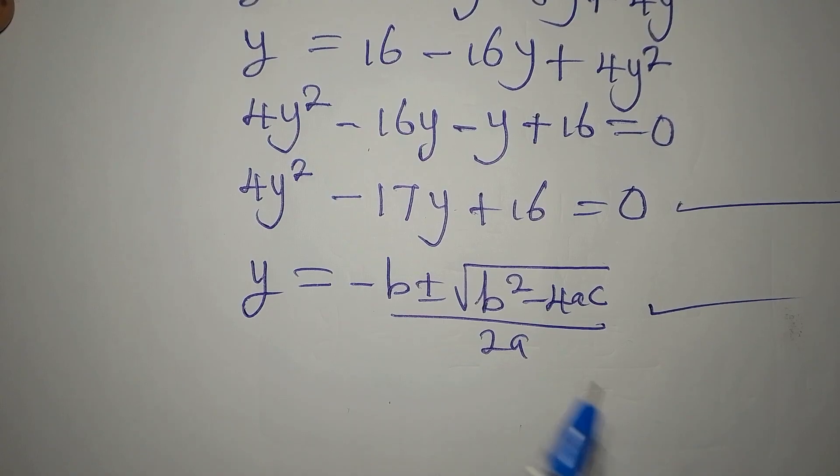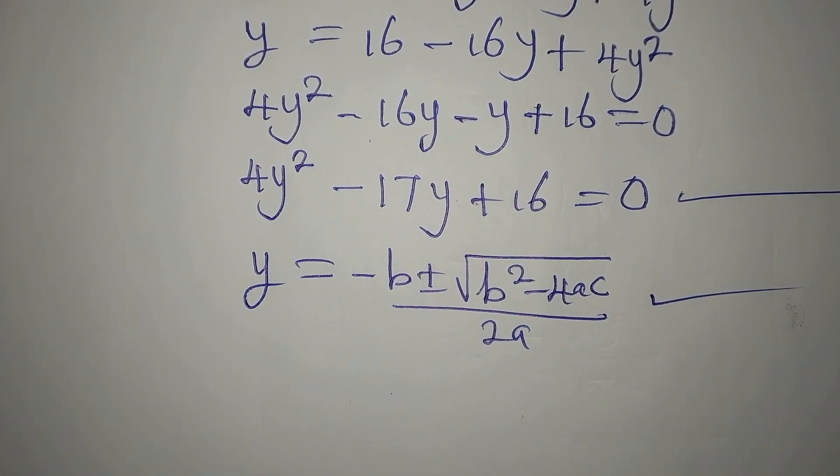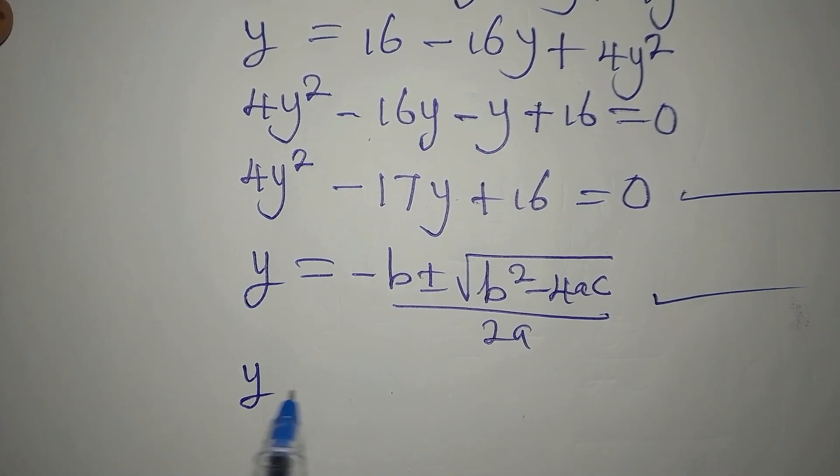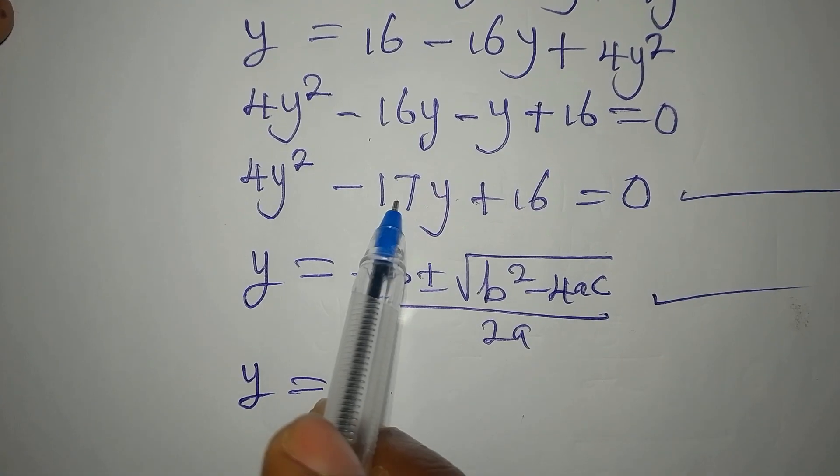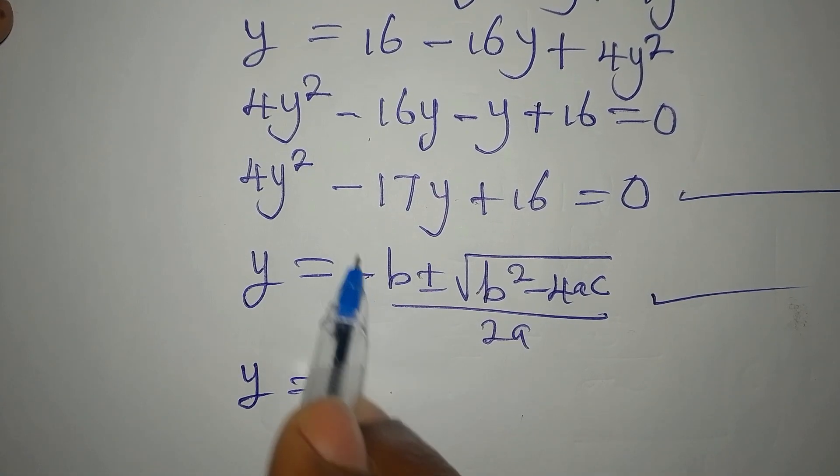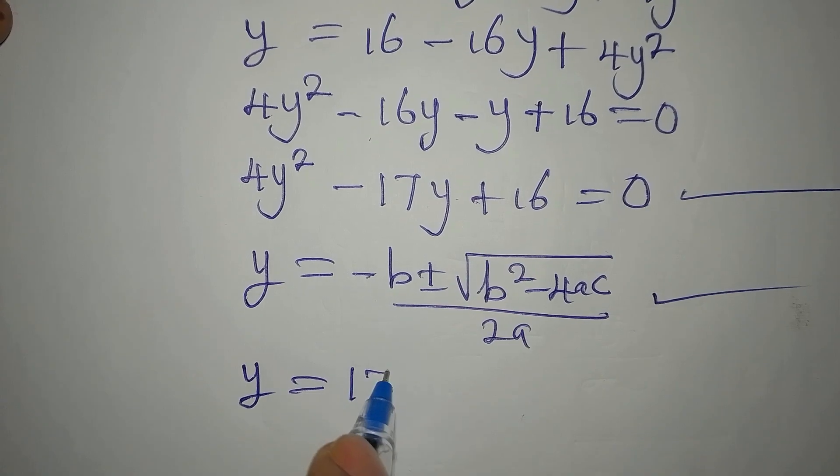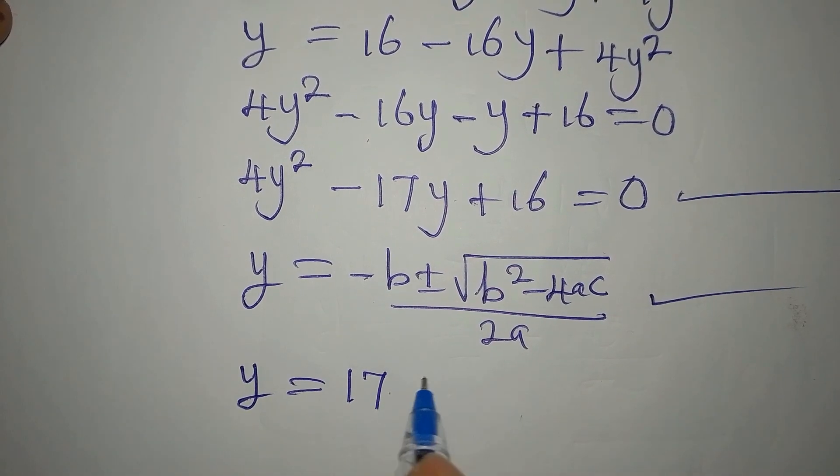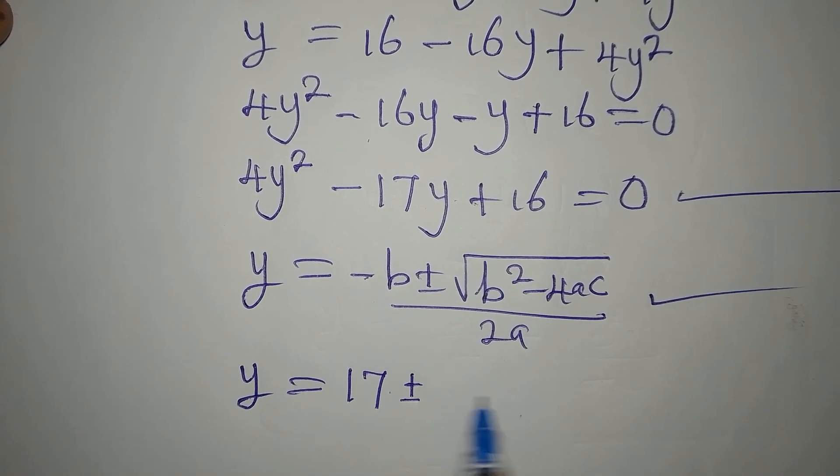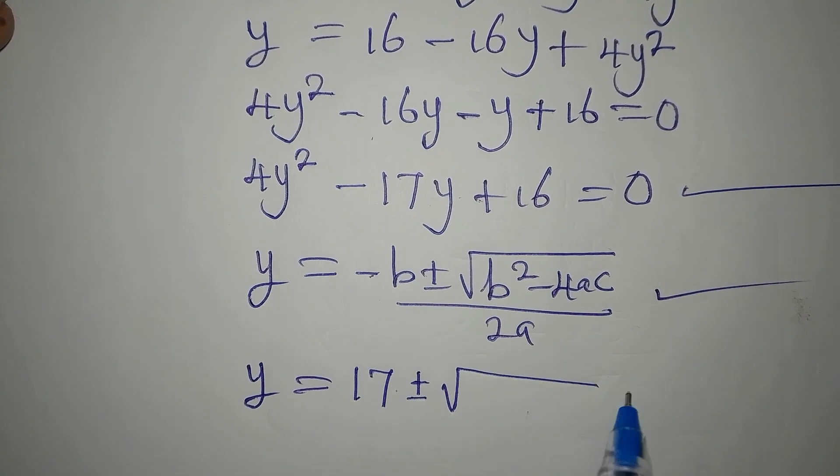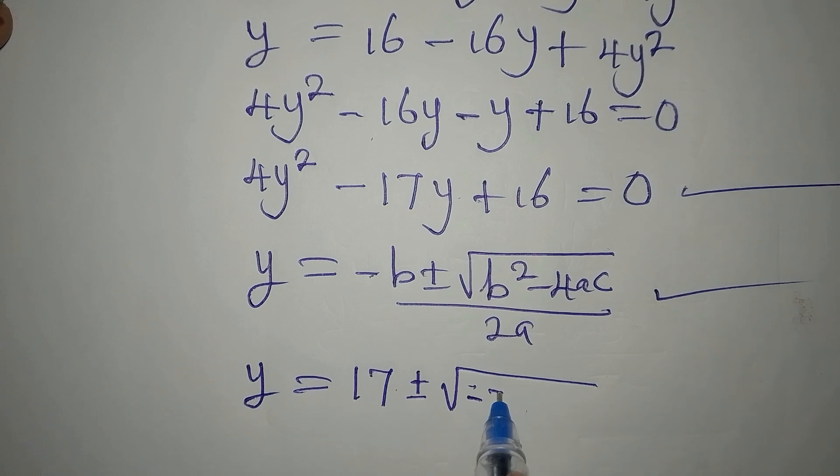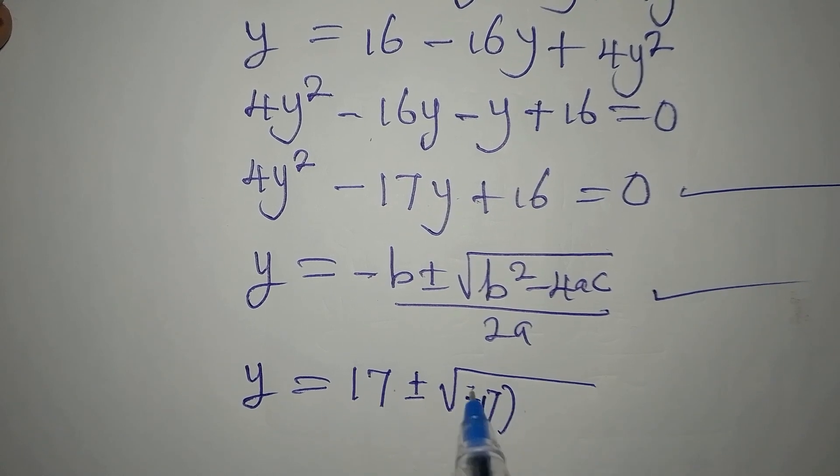So now y is, what is b? b is minus 17, so negative negative will turn this positive, 17 plus or minus, b is still negative 17, so I'll write negative 17, negative 17 squared.